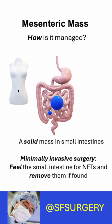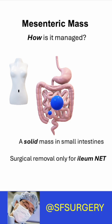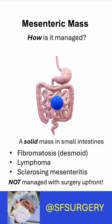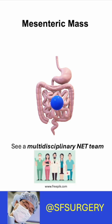And what happens if neuroendocrine tumors are not found? Biopsy of the mesenteric mass is done to determine what it is. Importantly, surgical removal of the mesenteric mass should only be done for neuroendocrine tumors, not for the other conditions. See a team of NET specialists to make sure your mesenteric mass is managed correctly.